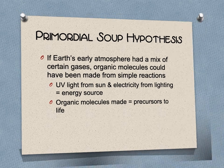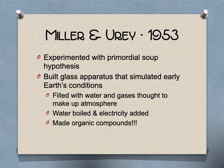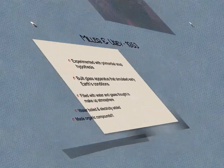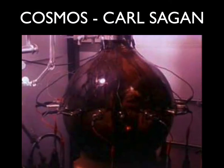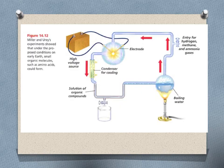Miller and Urey set up a proof-of-concept experiment where they put all the different ingredients into a glass vessel and let it go. You can see a picture of the glass vessel now streaked with complex amino acids. That is a video clip from Cosmos by Carl Sagan, which we don't have time to watch, so here is another explainer of what's going on.